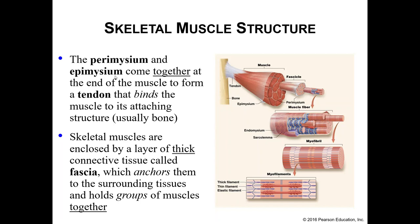The perimysium and the epimysium are going to fuse together at the end of the muscle and become a tendon. Tendons connect muscles to bones. The skeletal muscles are also enclosed by a layer of thick connective tissue called fascia, which anchors them to the surrounding tissues and holds groups of muscles together.